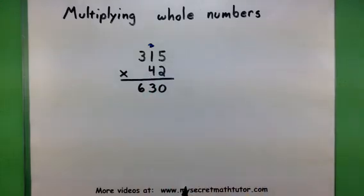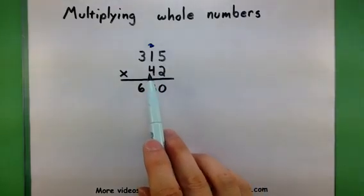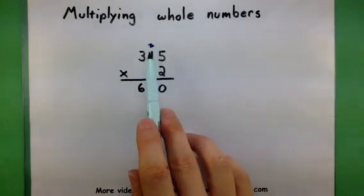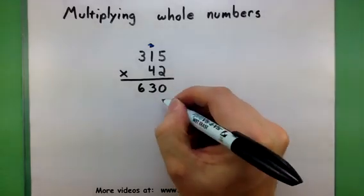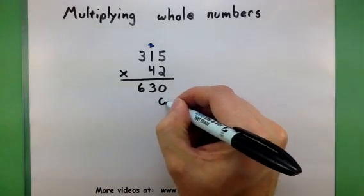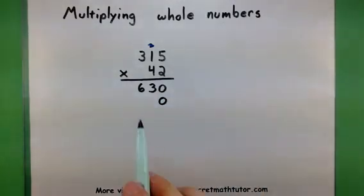Now, we need to take care of this 4. And we do it in much the same manner. One thing to remember, though, is that since this 4 is in the tens place, that it really represents 40. To compensate for this, I'm going to put in a 0 placeholder before I even start multiplying with that 4. Let's continue.